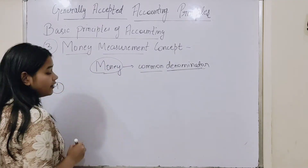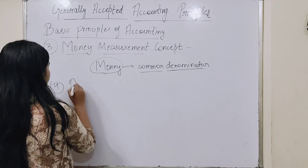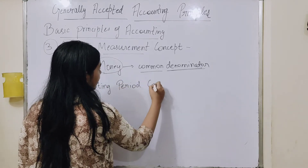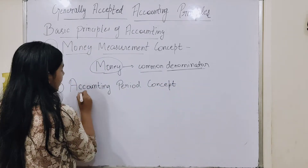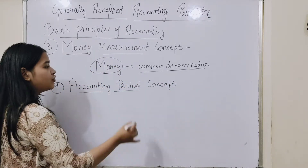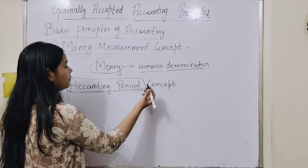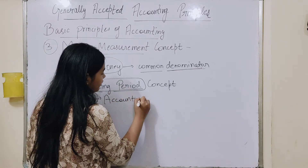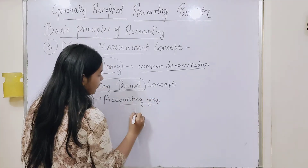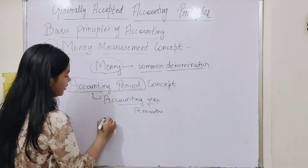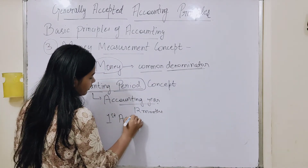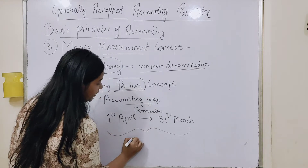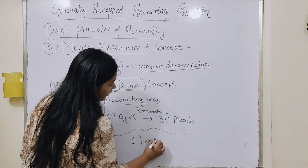Now if we come to the fourth concept, it is the Accounting Period Concept. What is the Accounting Period Concept? Accounting period is a term you are listening to in the ninth class. If there is any business, it has one accounting year — a 12-month time period. This is not from 1st January; it starts from 1st April and goes to 31st March. This is one accounting period for a business.